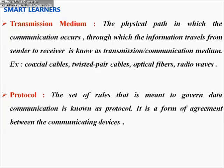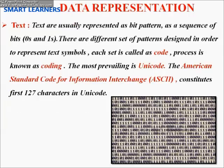The transmission medium is the physical path through which information travels from sender to receiver. Regarding data representation, text is usually represented in bit patterns — sequences of zeros and ones. Different patterns are designed to represent text symbols, and this process is known as coding. The most prevailing standard is Unicode; the American Standard Code for Information Interchange (ASCII) constitutes the first 127 characters in Unicode.